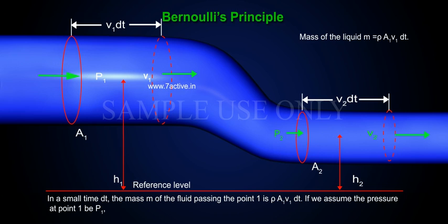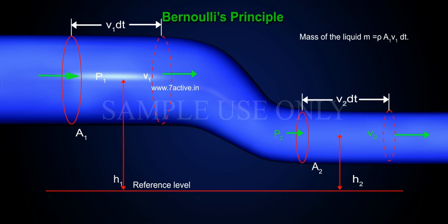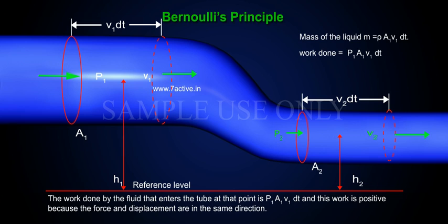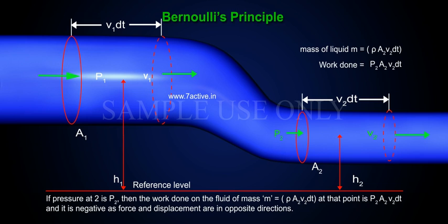If we assume the pressure at point 1 is P1, the work done by the fluid that enters the tube at that point is P1 A1 V1 DT, and this work is positive because the force and displacement are in the same direction.